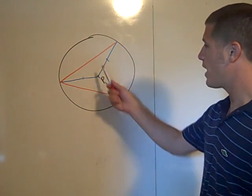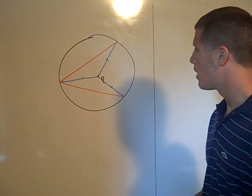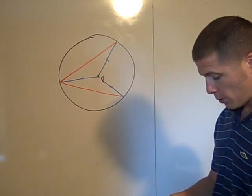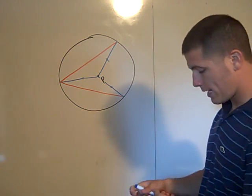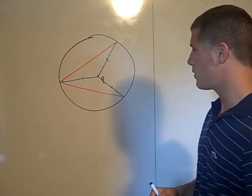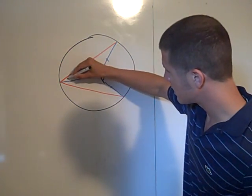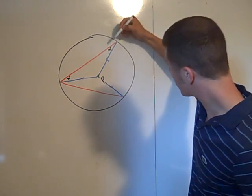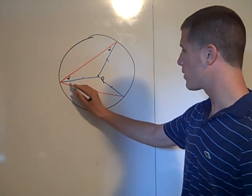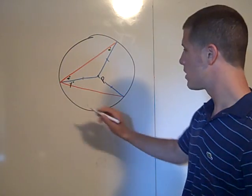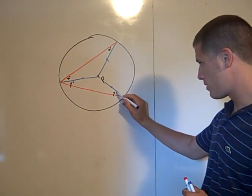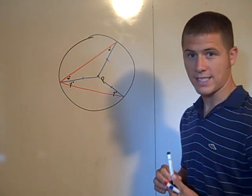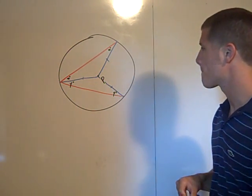So we've actually got two isosceles triangles. By the base angle theorem, the base angles of each isosceles triangle are congruent. If one base angle is x degrees, then its pair is also x degrees. If another base angle is y degrees, then its pair is also y degrees.